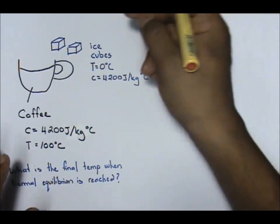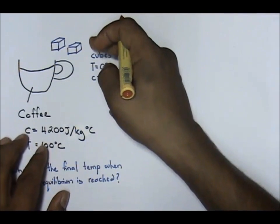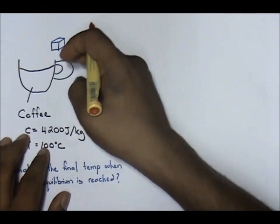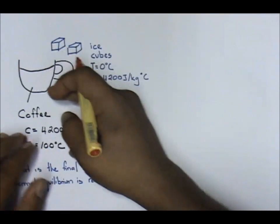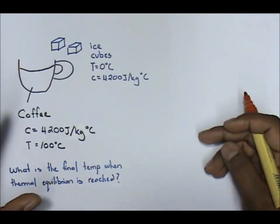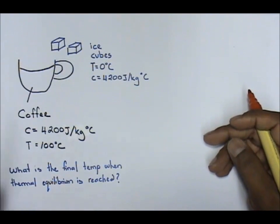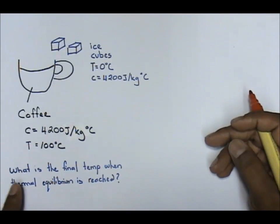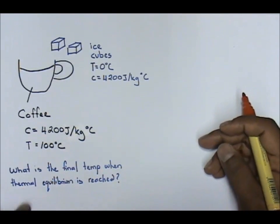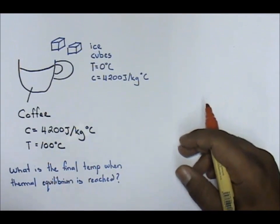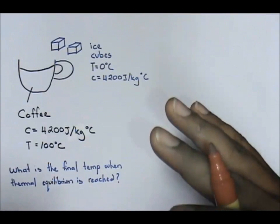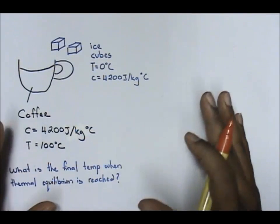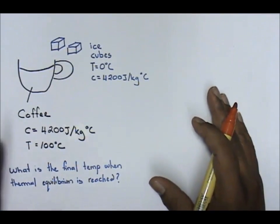Now, what happens here is the moment you put the ice cubes inside the coffee, after some time, the coffee will become a little bit colder. What I want you to calculate is the final temperature when coffee and ice cubes are at thermal equilibrium.